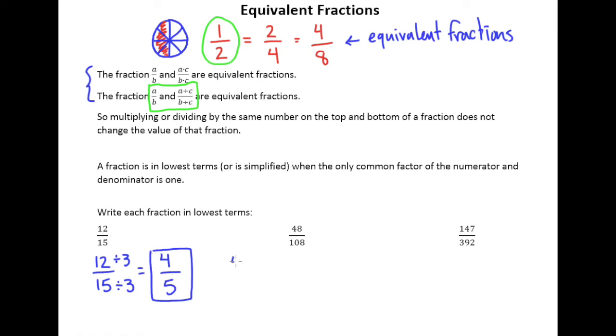Now looking at 48 over 108. So you certainly could find the greatest common factor here. That would be completely fine. You don't necessarily have to do that. You could just find a common factor between the two. They're both even. Anytime you have an even on both top and bottom, you could always just divide by 2.